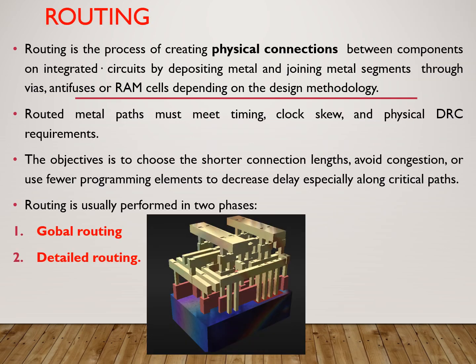First of all, we have to know what routing is used for. Routing means it is connections. Routing is the process of creating the physical connection between components present on an IC. We make the physical connection by depositing metals and joining metal segments through wires, antifuses, or SRAM cells depending on the design methodology and programming technology used.